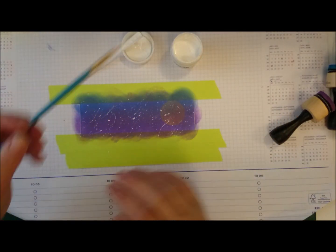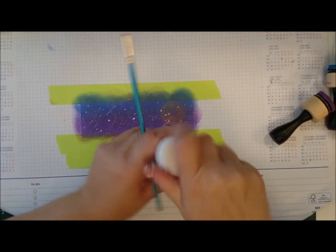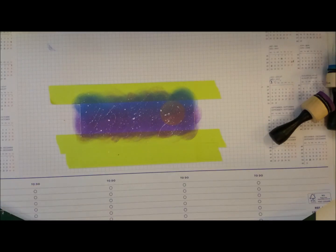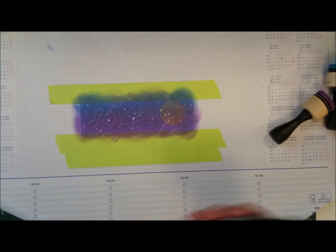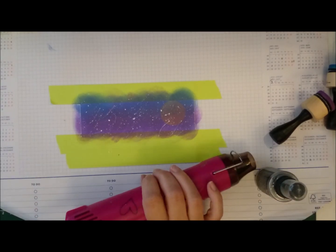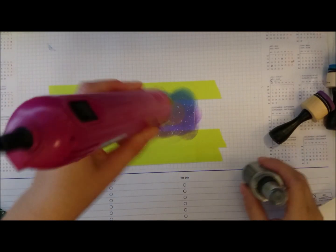I also pulled out the Distress spray stain in Brushed Pewter which is silvery, just for some shine that catches the light when you move the card. I like that. Brushed Pewter you have to shake it really well and I'm heat setting the white ink just to be sure.